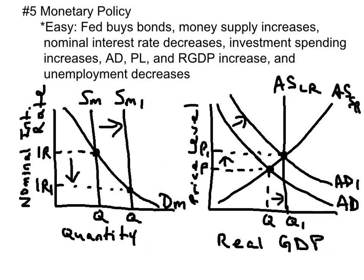Don't even think about showing up to the exam without mastering monetary policy. Monetary policy is when the Fed, through open market operations, buys or sells government securities. It can also change the discount rate or the reserve requirement, but the focus is on open market operations. If the economy is in recession, the Fed should pursue an easy monetary policy — that is, the Fed should buy bonds on the open market. This will increase the money supply, reduce nominal interest rates, and encourage investment spending in the short run, increasing aggregate demand, price level, and real GDP, and overall reduce unemployment.